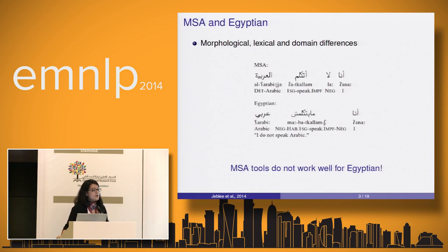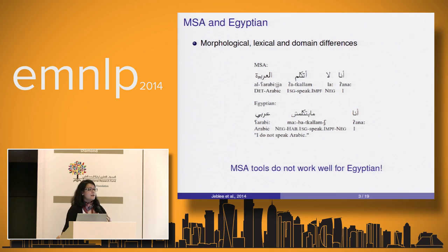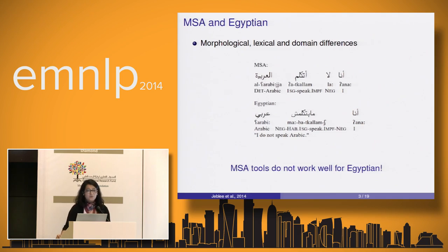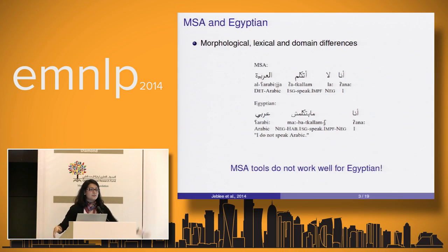One might say: Egyptian dialect and MSA are close — it's Arabic after all — why not use an English-to-MSA machine translation system and apply it to Egyptian? The answer is no, because Egyptian is different from MSA morphologically and lexically. In terms of domain, MSA is the formal language: texts written in MSA are very formal, while texts written in Egyptian are informal.